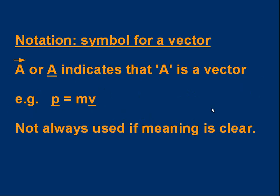Let's start with notation. We generally use letters to represent vectors. And if we just write the letter down, it may not be clear if the letter represents a vector or a scalar. One way to clarify that is to draw an extra symbol. A very common way of doing this is to put a small arrow, usually pointing to the right, over the letter. So if you see a letter with an arrow over it, it means the letter represents a vector.